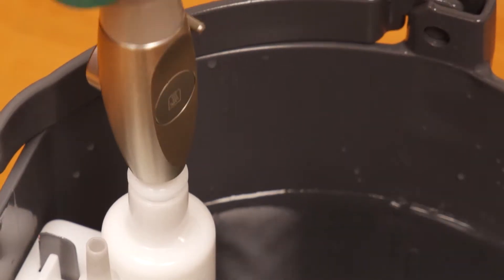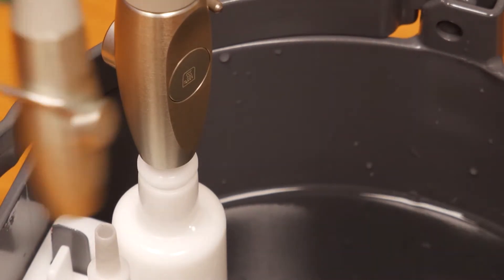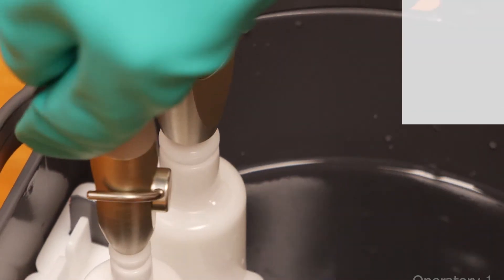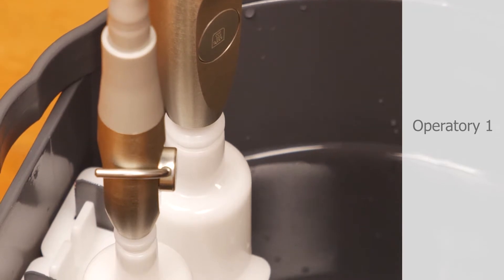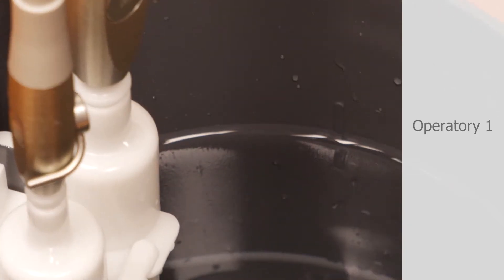Start with the operatory that is the furthest from your central vacuum pump. Attach the high and low suction lines to the dispenser valves and allow it to suction one quart of solution or until it reaches the next measuring line.